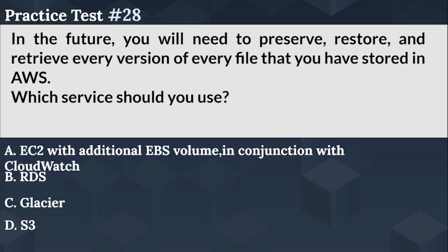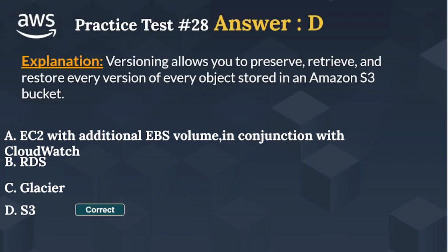The right answer is Option D. Versioning allows you to preserve, retrieve, and restore every version of every object stored in an Amazon S3 bucket.